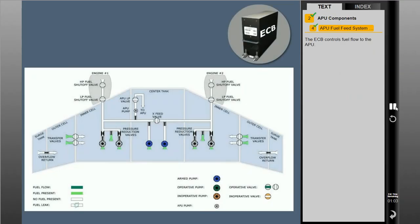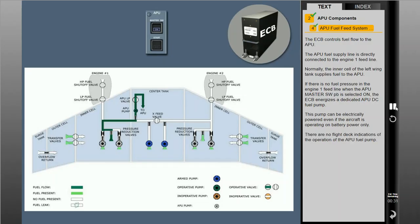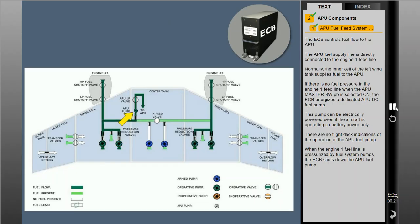The ECB controls fuel flow to the APU. The APU fuel supply line is directly connected to the engine 1 feed line. Normally, the inner cell of the left wing tank supplies fuel to the APU. If there is no fuel pressure in the engine 1 feed line when the APU master switch push button is selected on, the ECB energizes a dedicated APU DC fuel pump. This pump can be electrically powered even if the aircraft is operating on battery power only. There are no flight deck indications of the operation of the APU fuel pump. When the engine 1 fuel line is pressurized by fuel system pumps, the ECB shuts down the APU fuel pump.